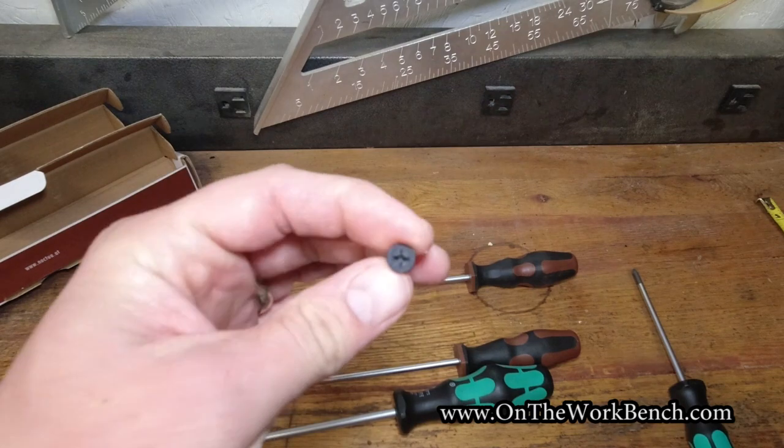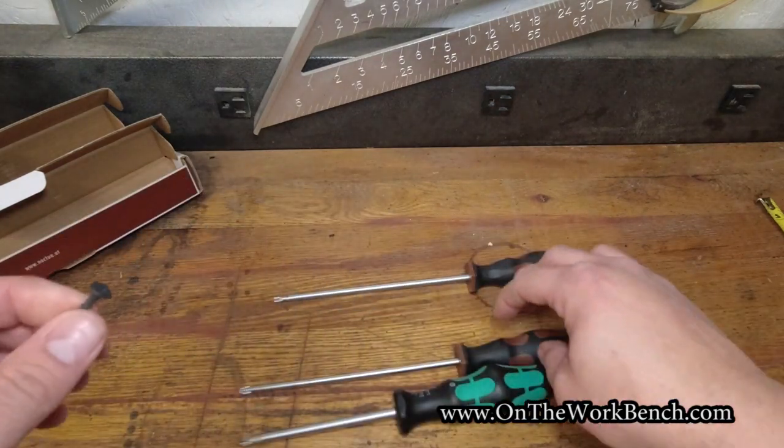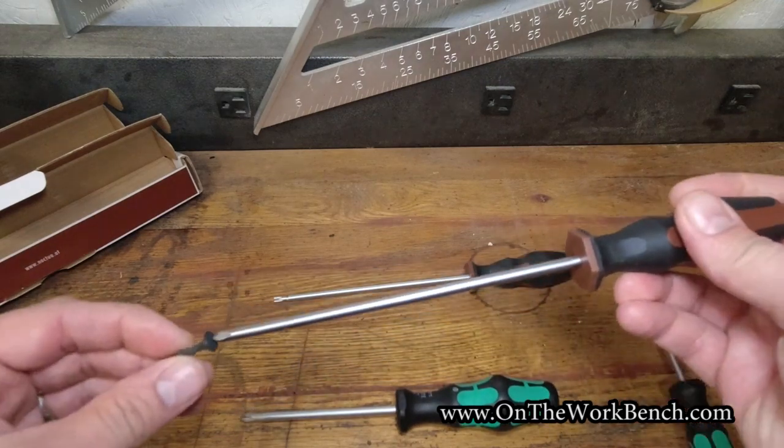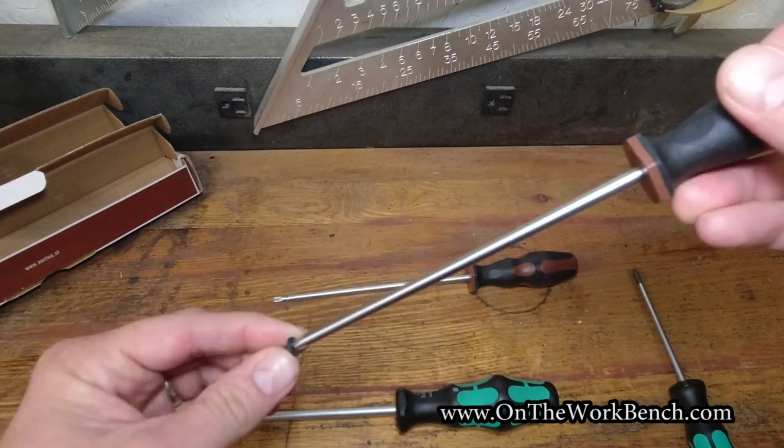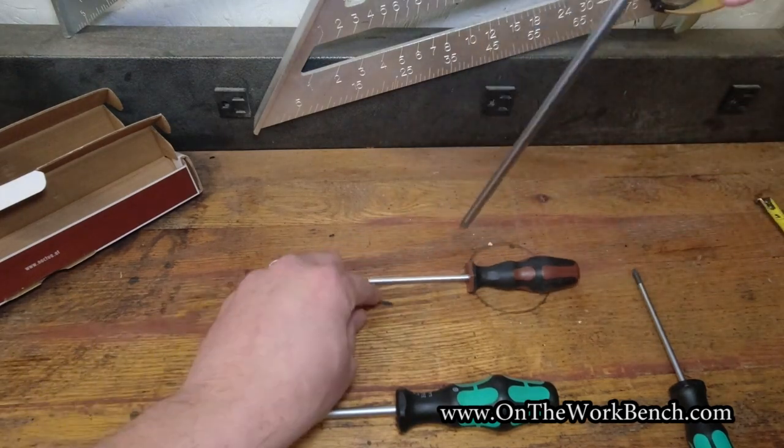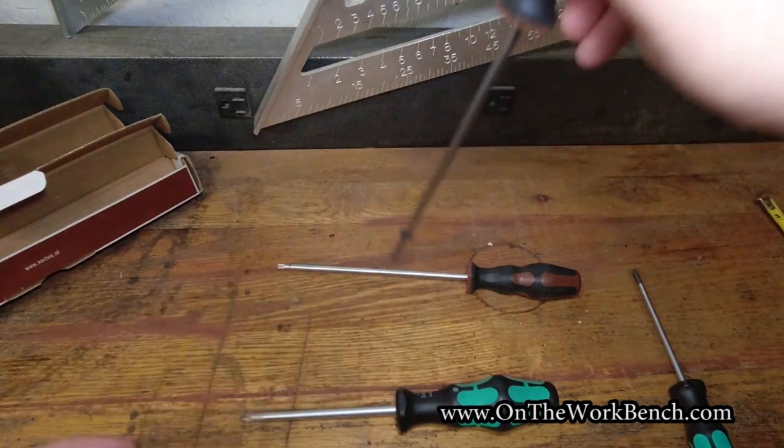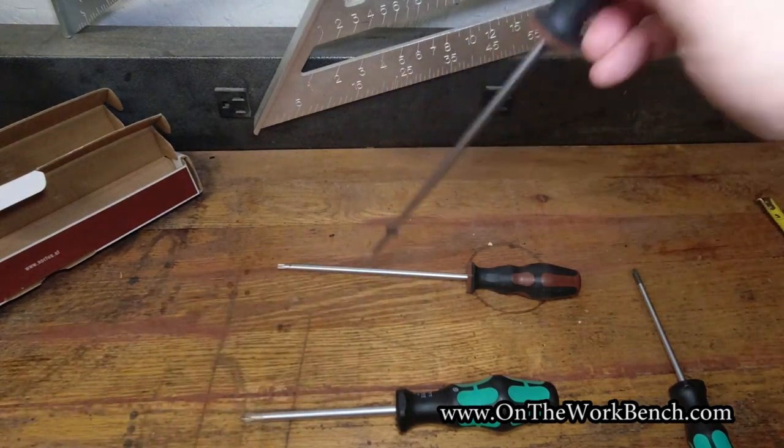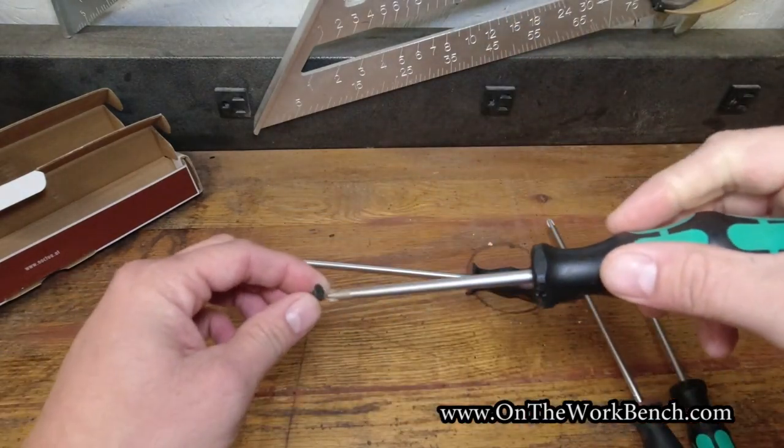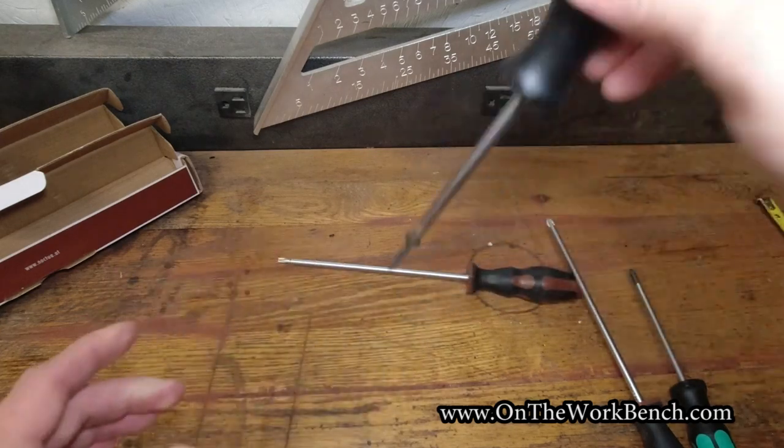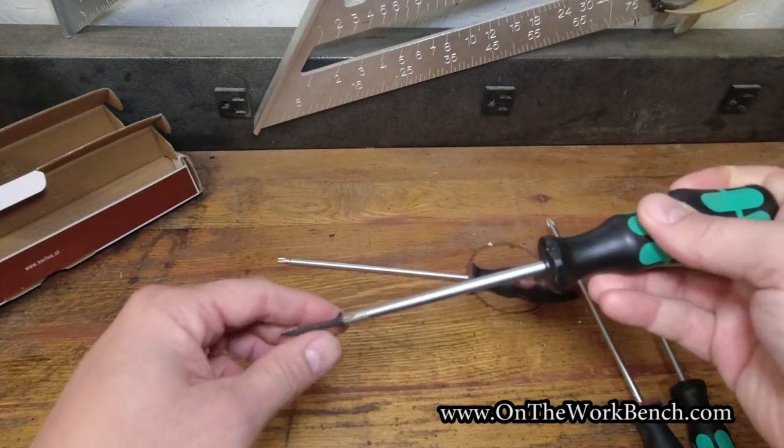Now here is a Phillips number two head. This is a basic standard drywall screw. Now let's take a look at this Noctua screwdriver here. That does seat in it and holds it. Let me shake it again, put it on the tip. Alright, now that's holding it. If I put it on the Vera, also holding it.